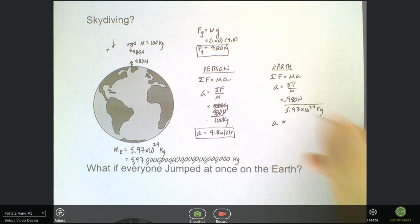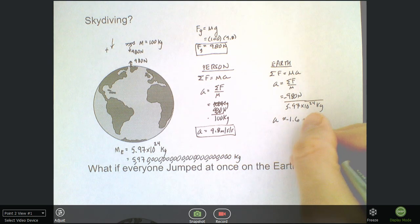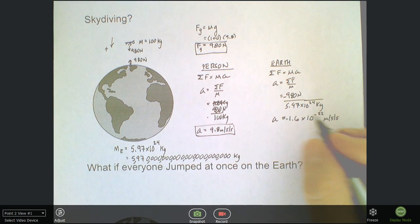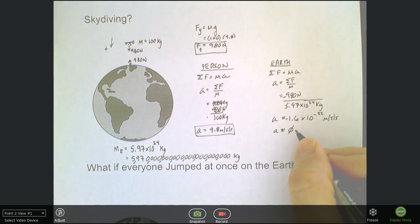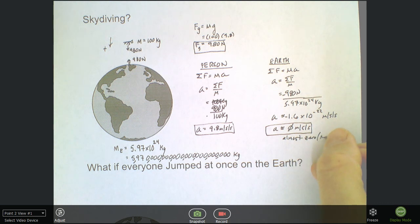Well, try to put that in your calculator. So you go 980 divided by 5.97 exponent 24, and you get negative 1.6 times 10 to the negative 22 meters per second per second. This is, for all intents and purposes, approximately 0 meters per second. It's not 0, but it's almost 0. It's what we would call negligible.